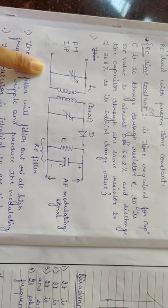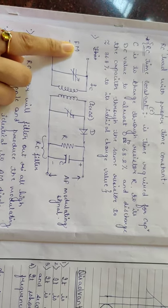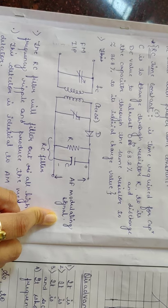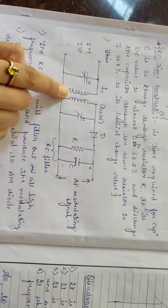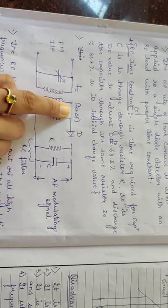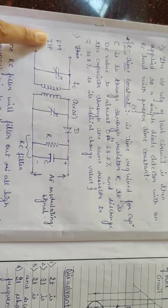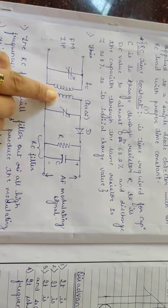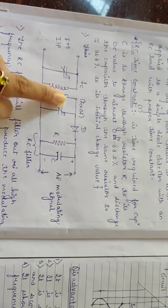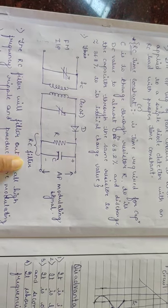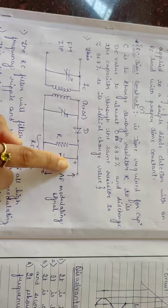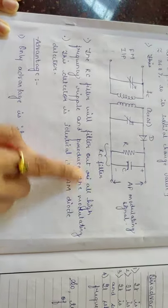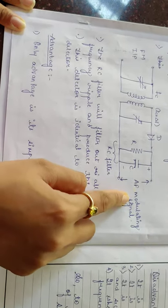This is the simple diagram for the simple slope detector. The FM input is applied as the input to the circuit. The diode D is at the receiver side and at the output we get the AF modulating signal. The transformer primary winding is tuned to fc and the secondary winding is tuned to fc plus Δf. According to the input frequency, the diode D conducts and the RC filter removes all the ripples. The RC filter filters out all high frequency ripples and produces the modulating signal at the output.